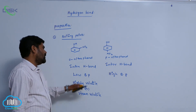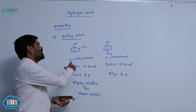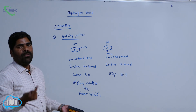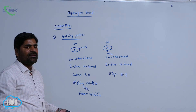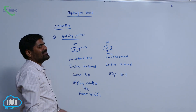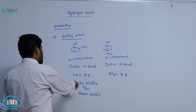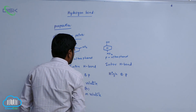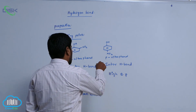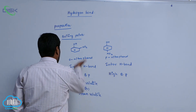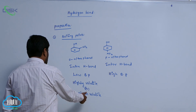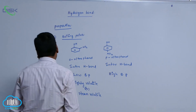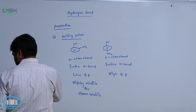So due to intramolecular hydrogen bonding, ortho-nitrophenol is not associated with another molecule. Therefore, bond strength decreases. That is the reason why it has a low boiling point compared to para-nitrophenol, and it is highly volatile or steam volatile compared to para-nitrophenol. This is one example. Thank you.